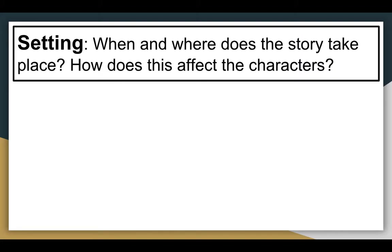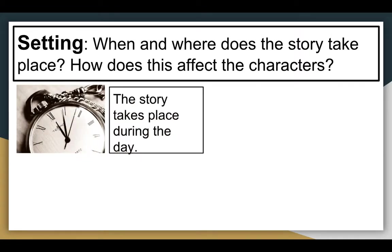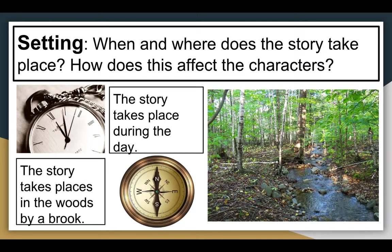Moving on to the setting — the setting is the when and the where the story takes place, and how does the setting affect the characters? The time is most likely during the day, as the dove can see the ant in the stream, so we can assume there's light out. The place is in a distant woods, and specifically there's a brook in those woods. Woods are seen as a dangerous or supernatural place — typically nothing good happens in the distant woods — so we can tell the characters are going to go through some conflict and danger connecting to that setting.